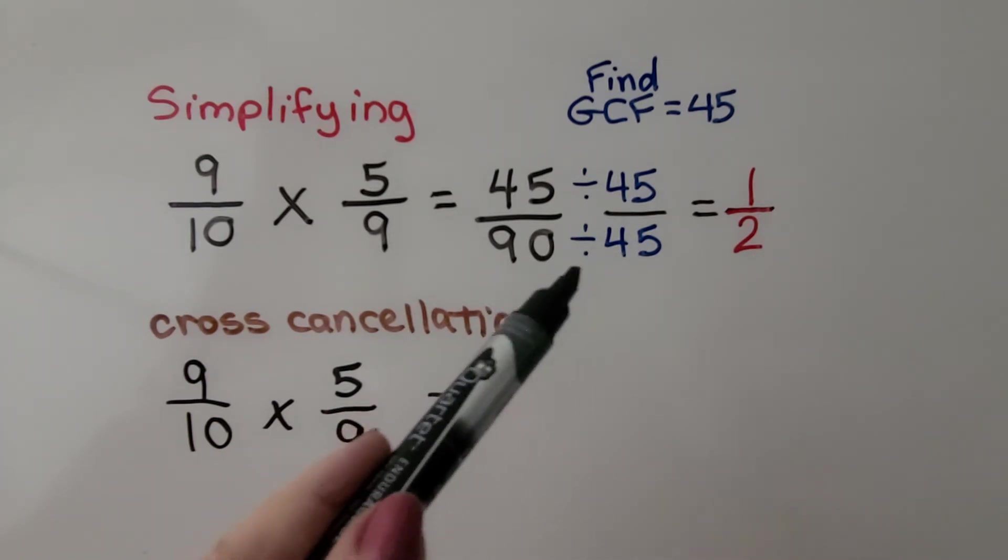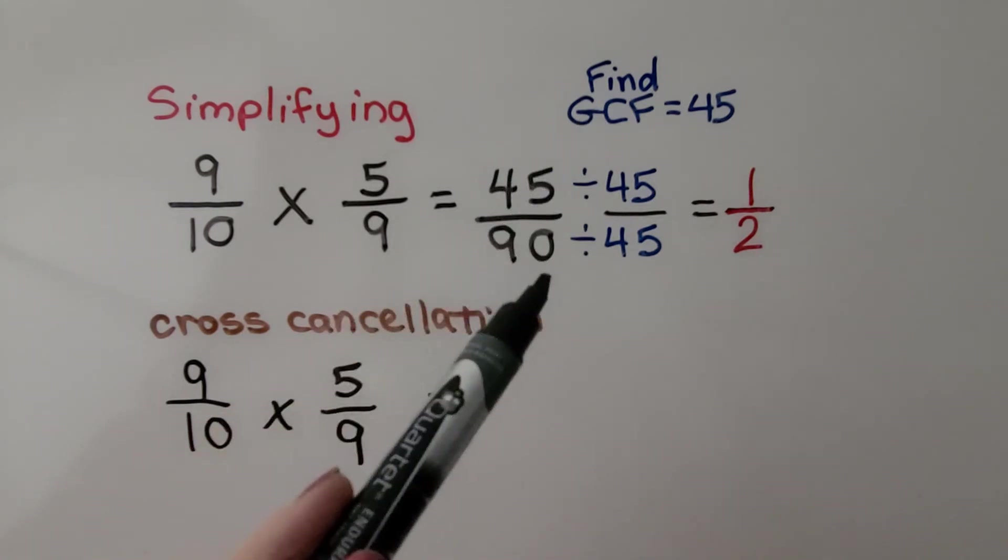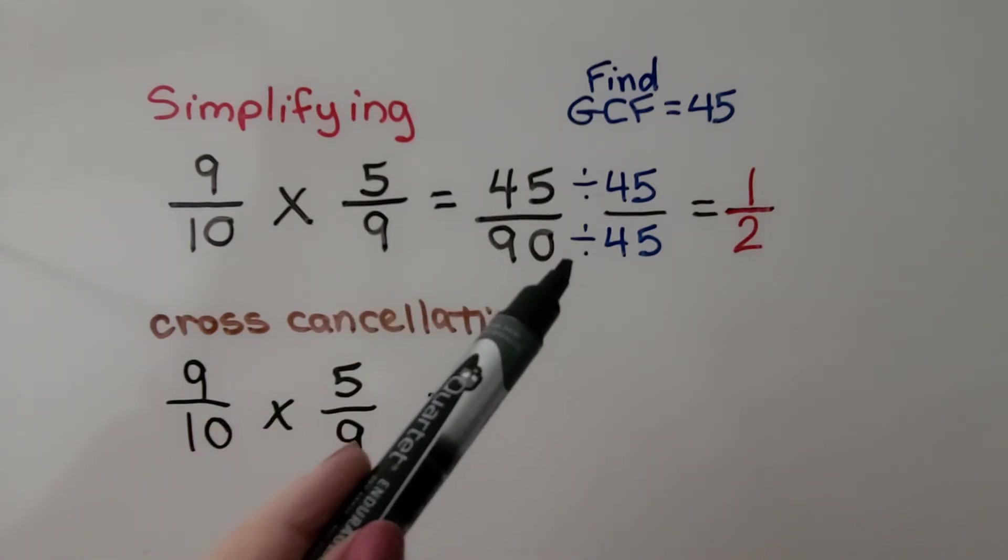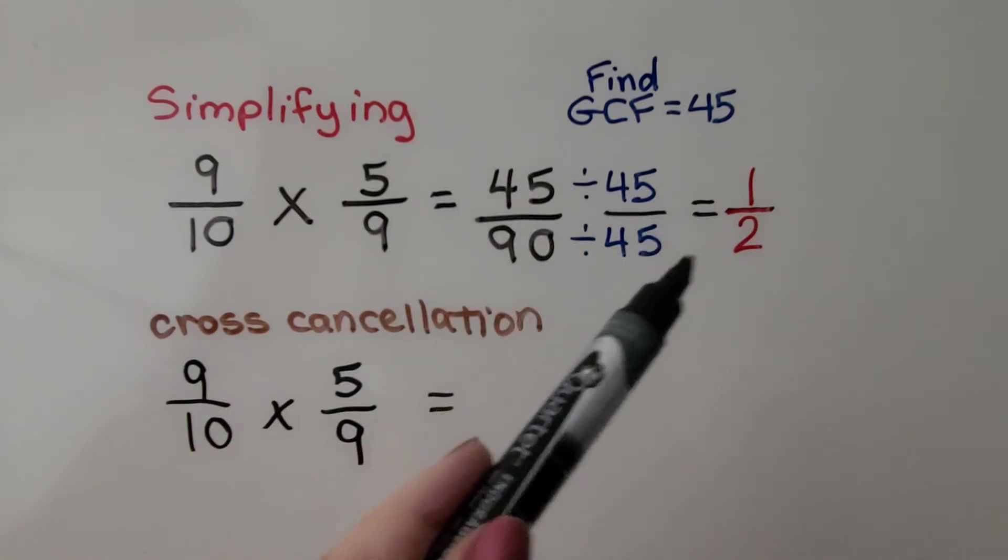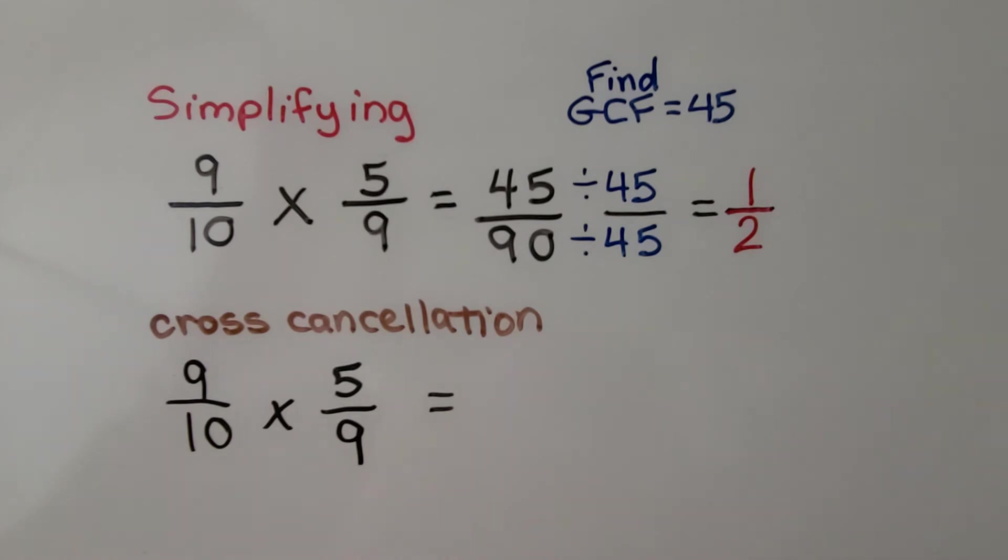This could become a problem if you don't find the correct GCF, and you just think we could divide them both by 5 or both by 9, and then you'll have to simplify again and again. If we use cross cancellation, 9 and 9 as factors have 1 in common. 1 times 9 is 9, and 1 times 9 is 9. We look at 5 and 10. 1 times 5 is 5, and 2 times 5 is 10. Now when we multiply straight across, we go 1 times 1, which is 1, and 2 times 1 is 2.